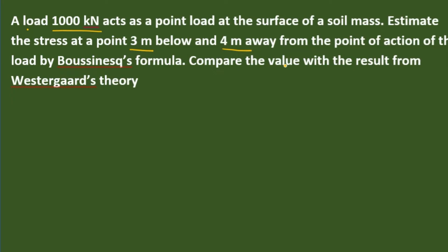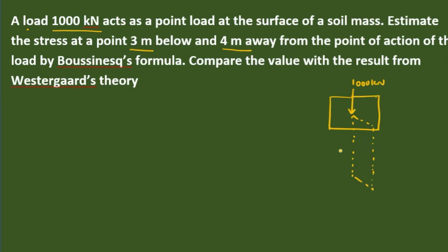We will solve this using Boussinesq's formula and compare the value with the result from Westergaard analysis. This point load is acting on the soil surface. The axis is defined, with 4 meters away from the axis of loading. The given values are: Q equal to 1000 kN, Z equal to 3 meters, and R equal to 4 meters.